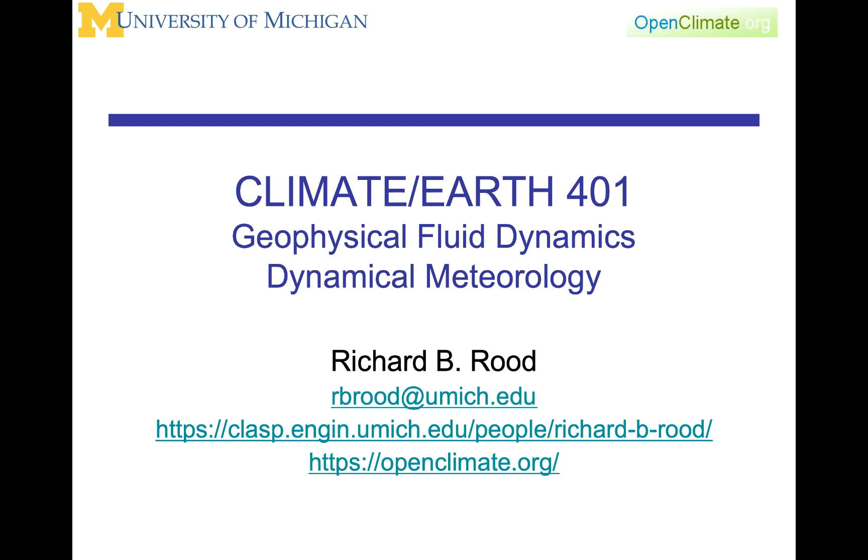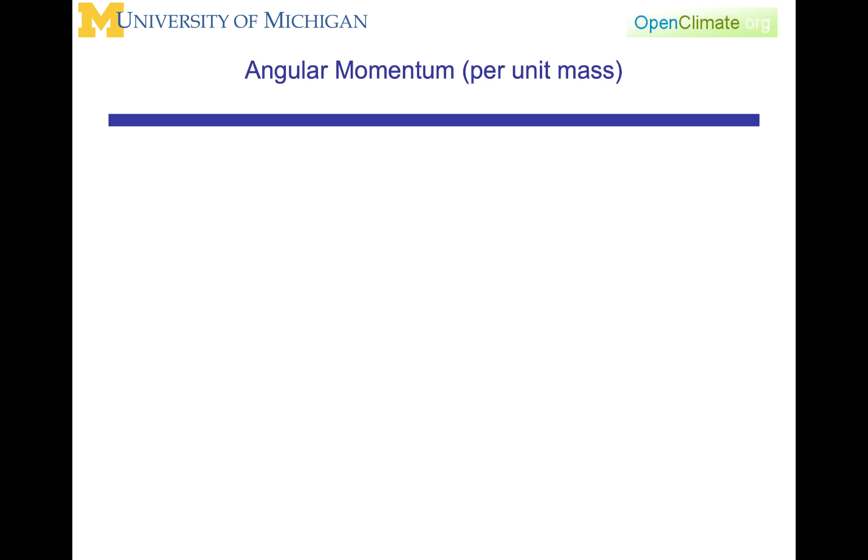This lecture in Climate and Earth 401 is about angular momentum. It's really about angular momentum per unit mass because we're going to keep with the convention that we want to look at force per unit mass. Force per unit mass is really acceleration. Momentum per unit mass is really velocity. What we will really be looking at here is angular velocity or angular momentum per unit mass.